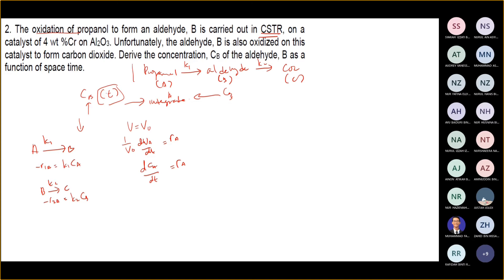So because it is a CSTR, directly dCA/dT = RA. At T=0, you need to integrate from T0 to any T. So you will have the rate R(net) as the summation of both rate of reactions: K1·CA plus K2·CB.